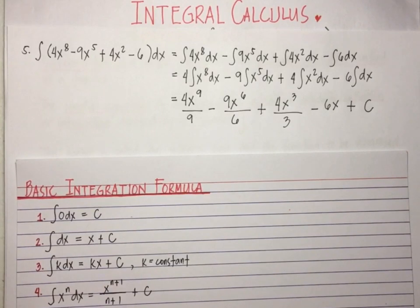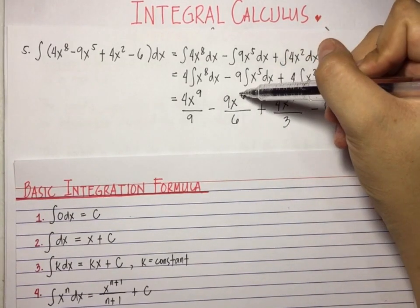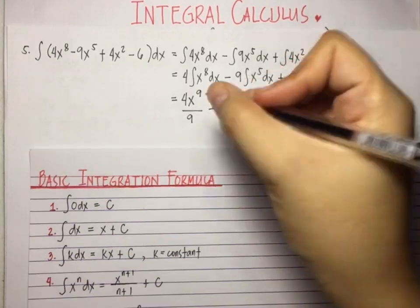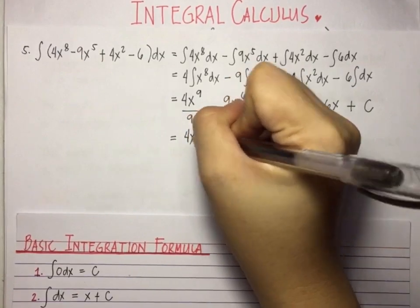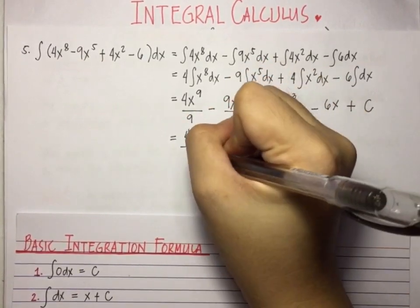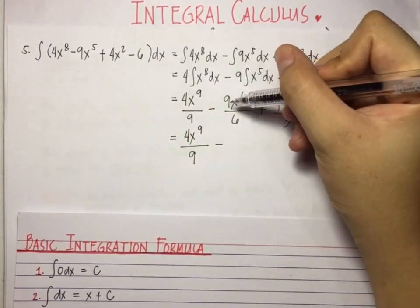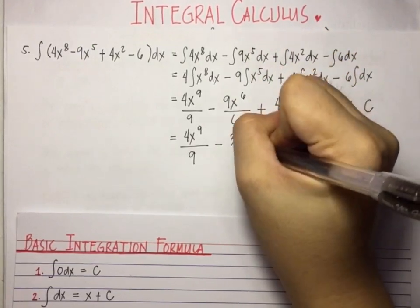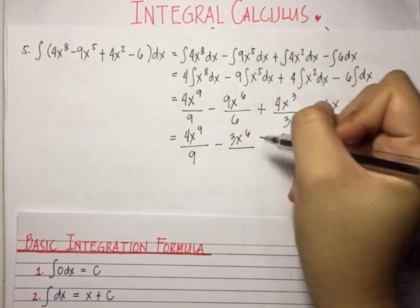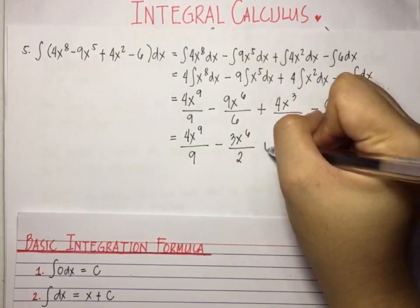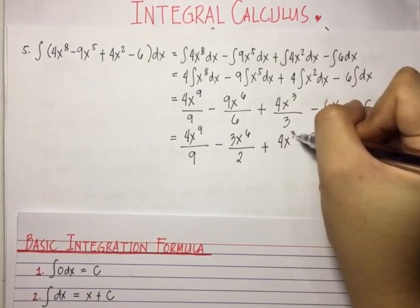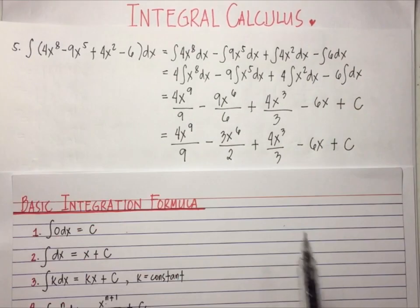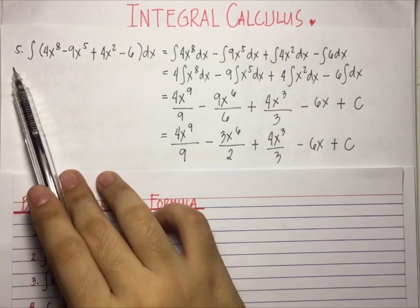We can still simplify by reducing 9x raised to 6 over 6 in its lowest form. Dividing top and bottom by 3 gives 3 times x raised to 6 divided by 2. So the final answer is 4x raised to 9 divided by 9, minus 3x raised to 6 divided by 2, plus 4x cubed over 3, minus 6x plus c. And this is the integral of number 5.